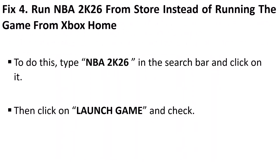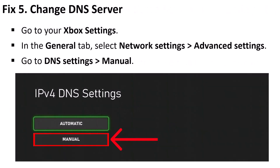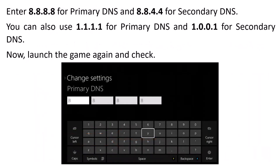Fix 4 is to run the NBA 2K26 game from the store instead of from the Xbox home. To do this, type NBA 2K26 in the search bar, click on it, then click Launch Game and check. Fix 5 is to change the DNS server. Go to Xbox Settings, in the General tab select Network Settings, then Advanced Settings, go to DNS Settings, select Manual, enter 8.8.8.8 for primary DNS and 8.8.4.4 for secondary DNS, then launch the game and check.